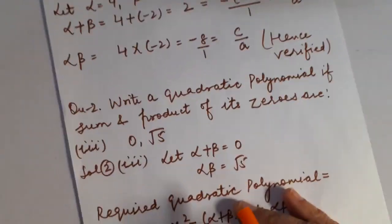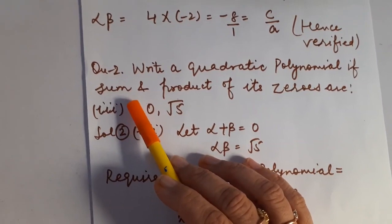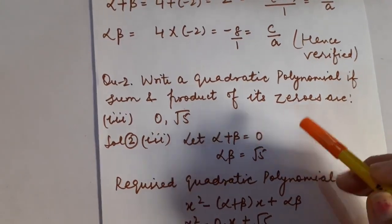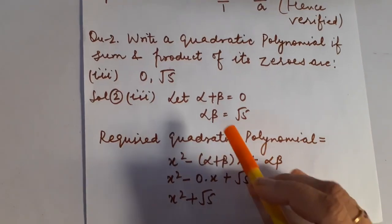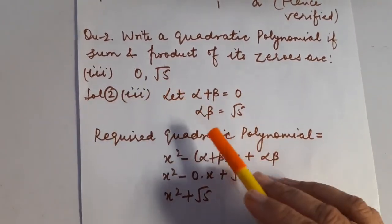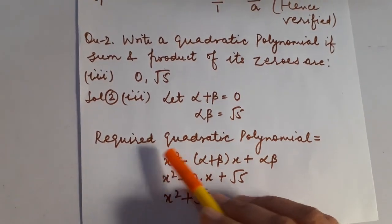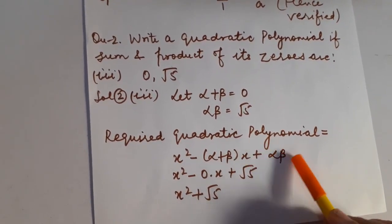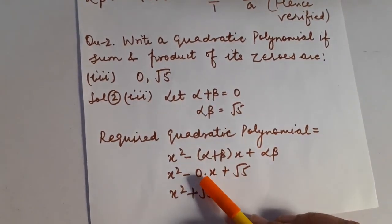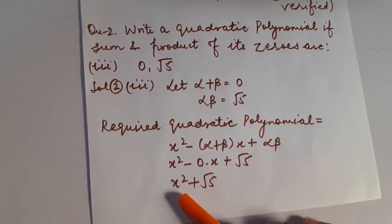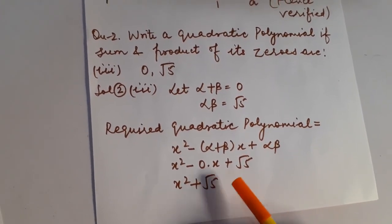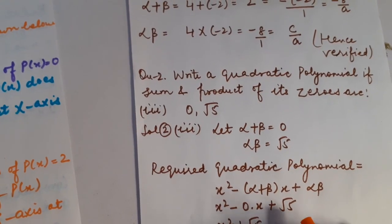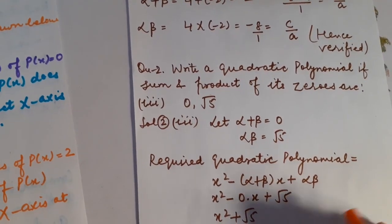Now let us switch to the next question: write a quadratic polynomial when you know the sum and product of the zeros. Sum = alpha + beta = 0, and product = alpha times beta = √5. The required quadratic polynomial is x² − (alpha + beta)·x + alpha·beta = x² − 0·x + √5 = x² + √5. Your homework is to do exercise 2.1 and 2.2, the remaining parts. Thank you.